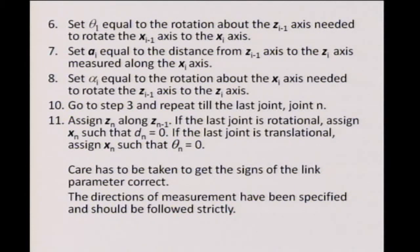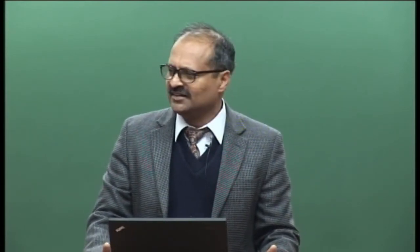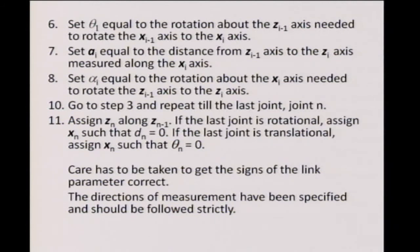You go back and repeat until the last joint n. After completing this, you have a problem: how do you assign z_n? The algorithm would tell you to put it along the (n+1)th axis, which does not exist. So you assign z_n along z_{n-1}. If the last joint is rotational, assign x_n such that d_n equals 0. If it is translational, assign x_n such that theta_n equals 0, and you are done with the assignment.